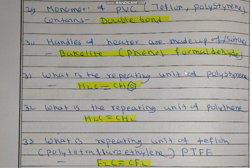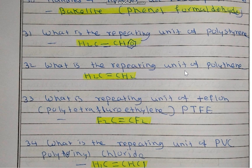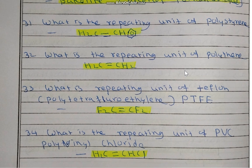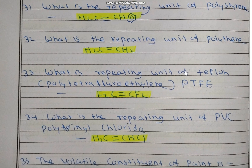What is the repeating unit of polystyrene? The repeating unit of polystyrene is styrene. What is the repeating unit of polythene? The repeating unit is ethylene, which is also the repeating unit of polyethylene.